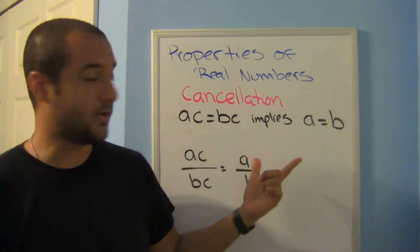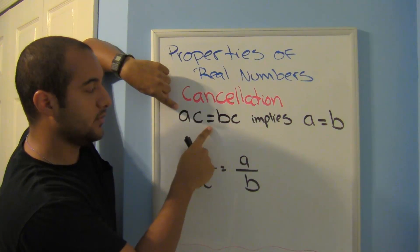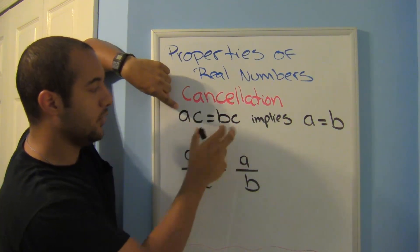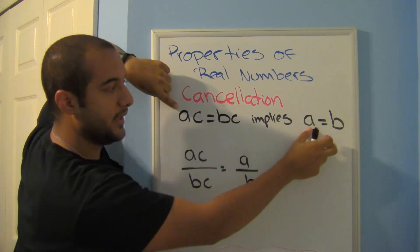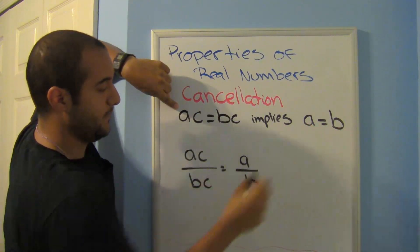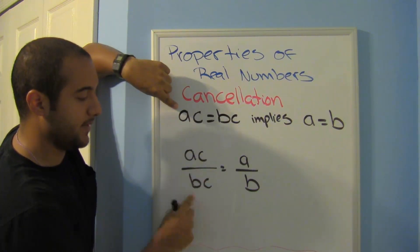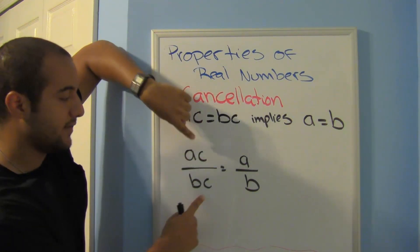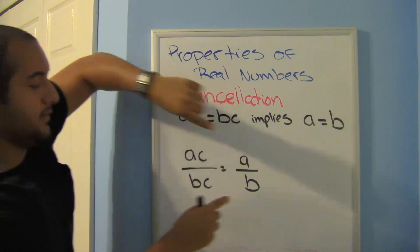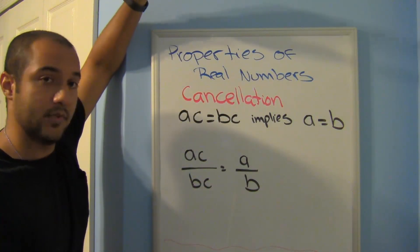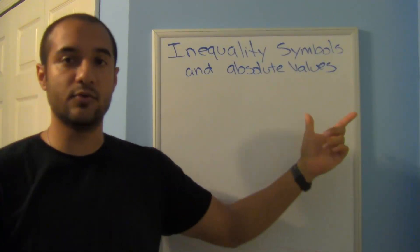The cancellation properties: if a times c equals b times c, notice they have c in common — this implies a equals b. Similarly, ac divided by bc simplifies to a over b, since the c's cancel. And that's it for today. Next time we'll look at inequality symbols and absolute values.